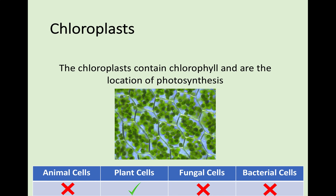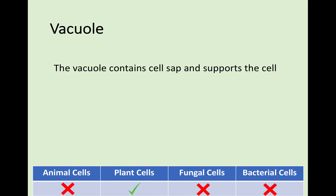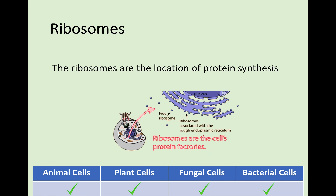Chloroplasts are green because they contain chlorophyll. This is where photosynthesis takes place in the plant cell, and you will only find them in plant cells - so straight away, if you see a chloroplast, you know it is a plant cell. Similarly, the vacuole is only in a plant cell and it contains cell sap. It is also useful for supporting the cell. Ribosomes are found in all four cells that we have looked at, and they are the location of protein synthesis - this is where proteins are made. You just need to know that this is the location of protein synthesis.